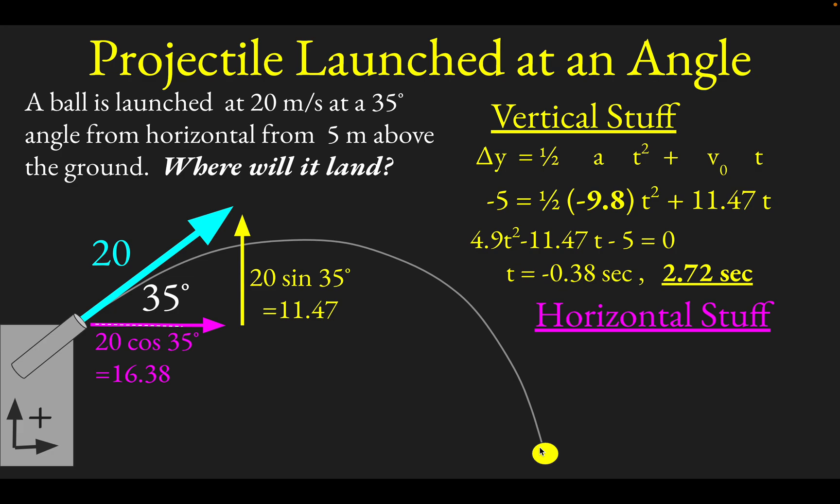Now let's look at the horizontal stuff. Same kinematic equation, but now we'll be talking about x instead of y. The key here is horizontally the acceleration is zero if we're not accounting for air drag, which we won't in this problem, so this whole entire first term is zero.